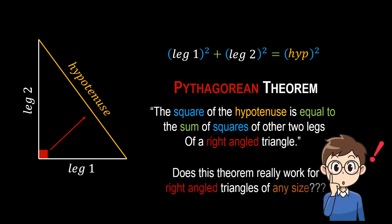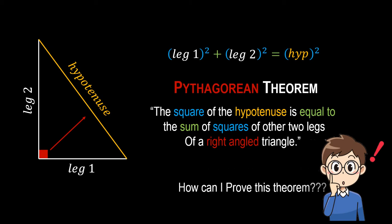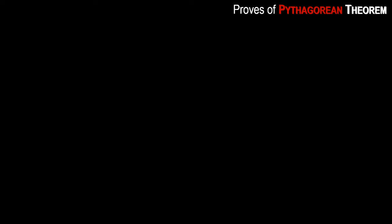Does this theorem really work for a right-angle triangle of any size? How can we prove this theorem? This video has been recorded to show you how we can prove the Pythagorean theorem. We will prove it using three different approaches, so you can understand any one of them. I'm writing the theorem right here for reference so that we can compare whether we have proved it or not.